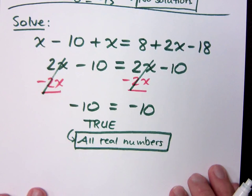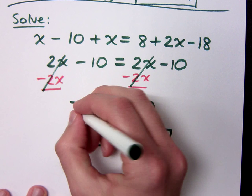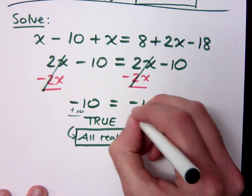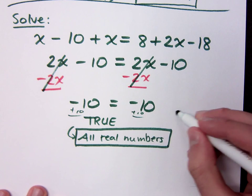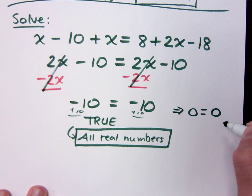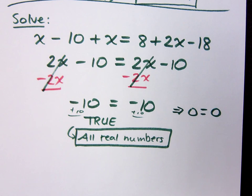Likewise, down here, where I have negative 10 equals negative 10, if I add 10 to both sides, I would have 0 equals 0, which is still a true statement, right? So, what this equation is saying is it doesn't matter what value you think of to plug in, it's always going to work out. Is that okay? All right.